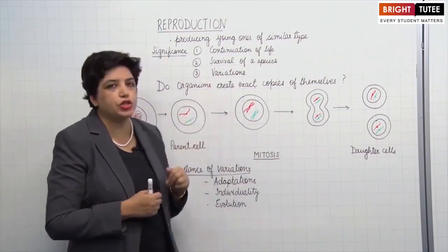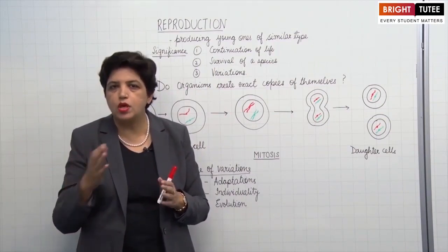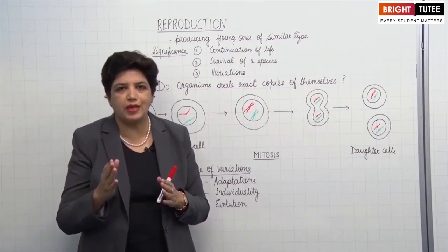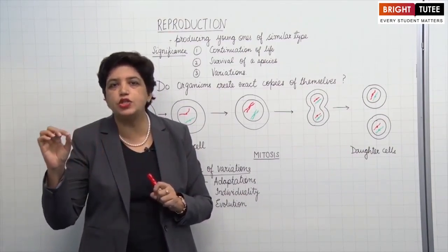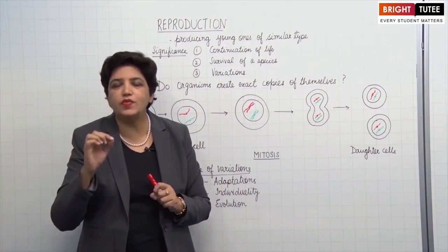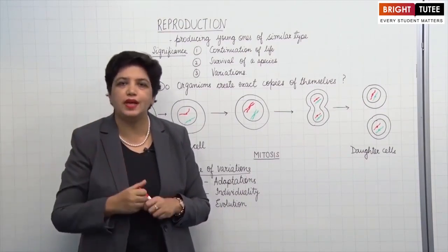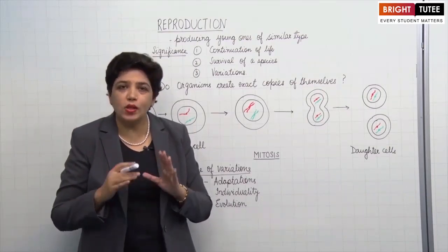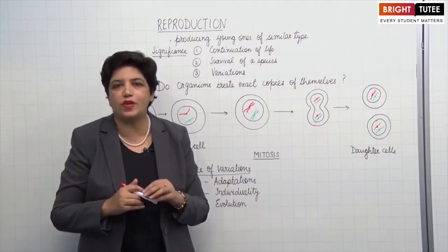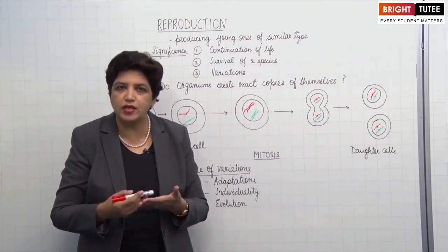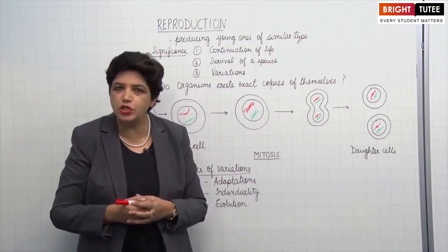Thirdly, variations. During reproduction, the new generations which are produced, although they are similar to the parents, but they are not exact copies. So there is certain variation in each generation. These variations are very important as they lead to evolution and adaptation to the environment. So although reproduction is not an important life process for the survival of a living being, it has its own significance for the continuation of life and continuation of species on the earth.